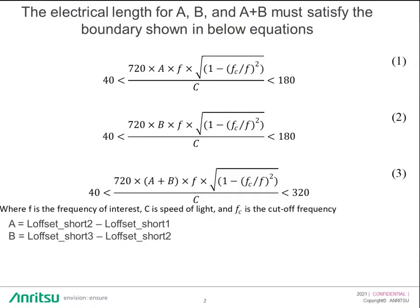These are the equations. Equations 1, 2, and 3 are used to either select electrical length for A, B, and A plus B, or if you know the frequency of interest, you can also derive the electrical length as well. A is equal to offset short 2 minus offset short 1, and B is offset short 3 minus offset short 2, and A plus B is offset short 3 minus offset short 1.